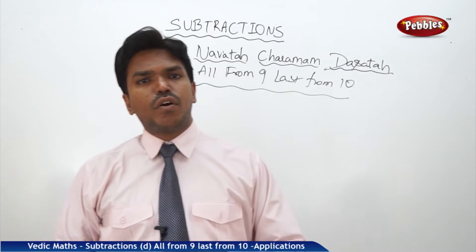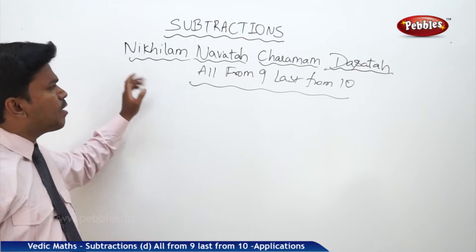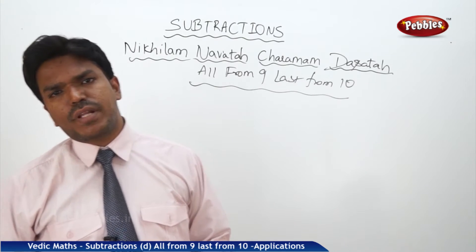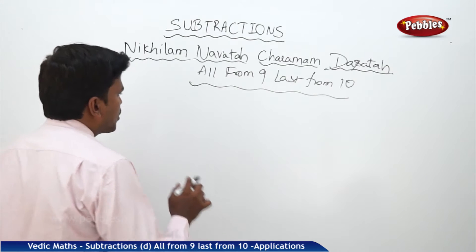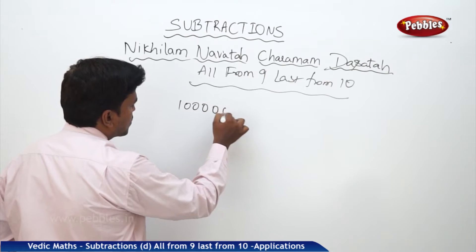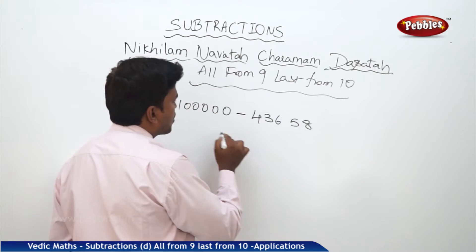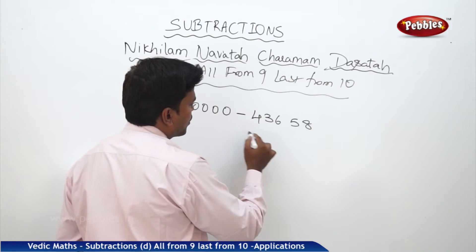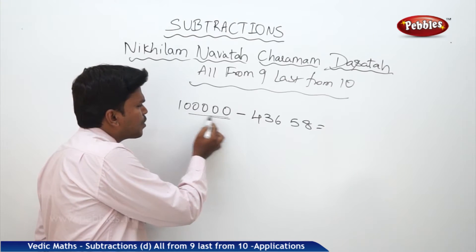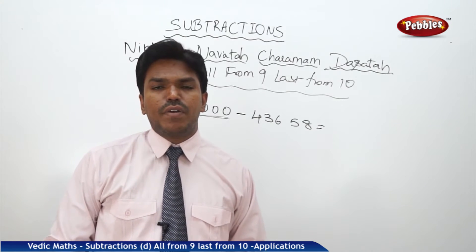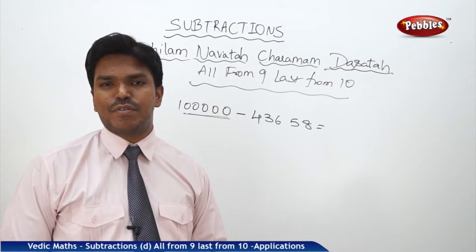Friends, in this session we are going to discuss another application of Nikhilam Navataha Cheramam Dashtaha — that is, 'All from 9, Last from 10.' How can we use this concept in one more way? Whenever you are getting numbers like this — suppose I want to subtract 1 lakh minus 43658 — whenever the minuend is having a number of zeros like this, it is very easy to do this with the help of Nikhilam Navataha Cheramam Dashtaha.